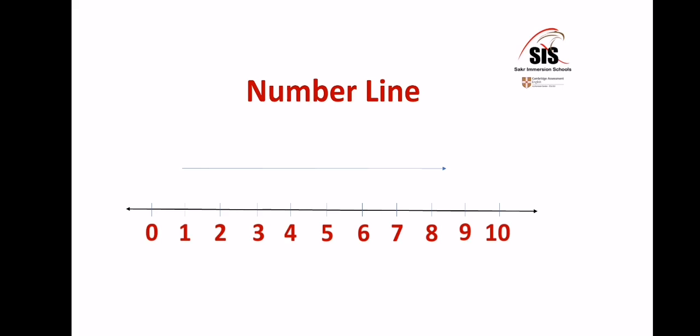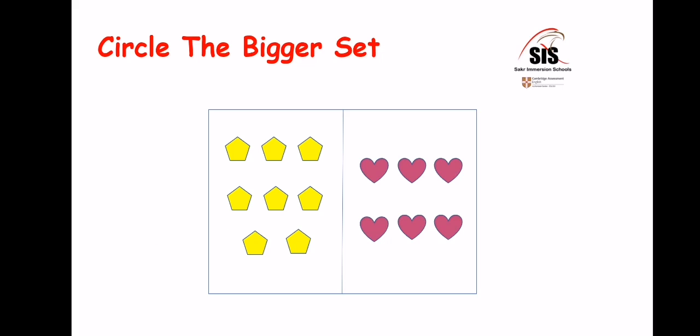Remember, we can count till any number on the number line. So if we have two and seven, we can tell that seven is bigger than two, because seven comes after two on the number line.